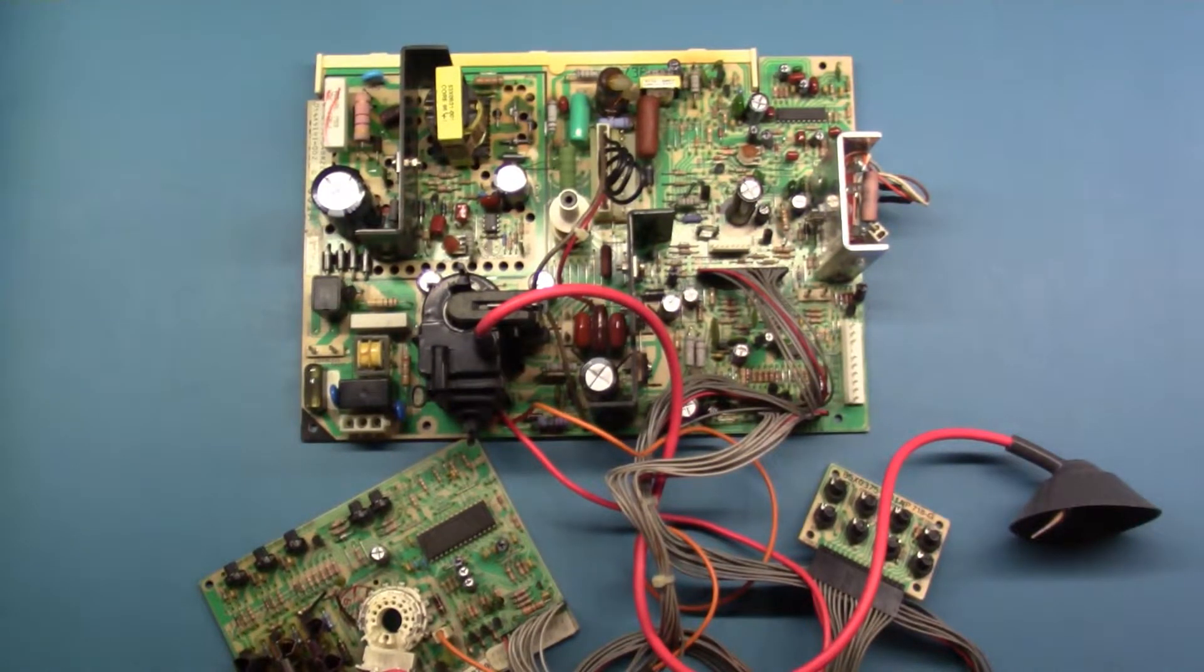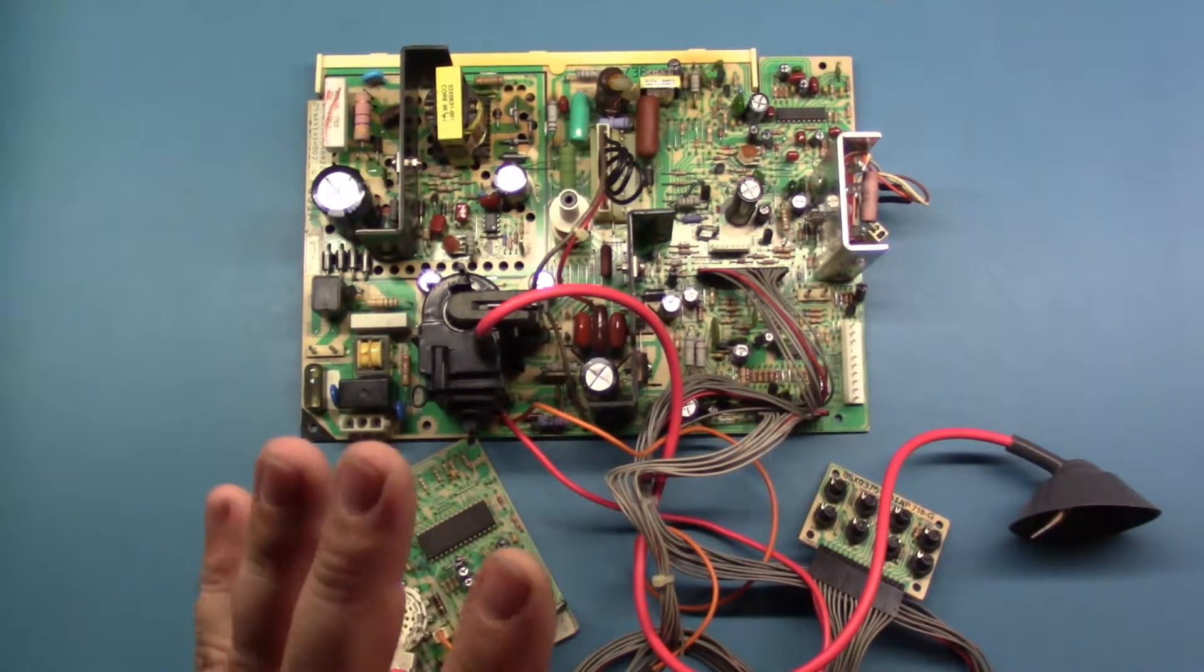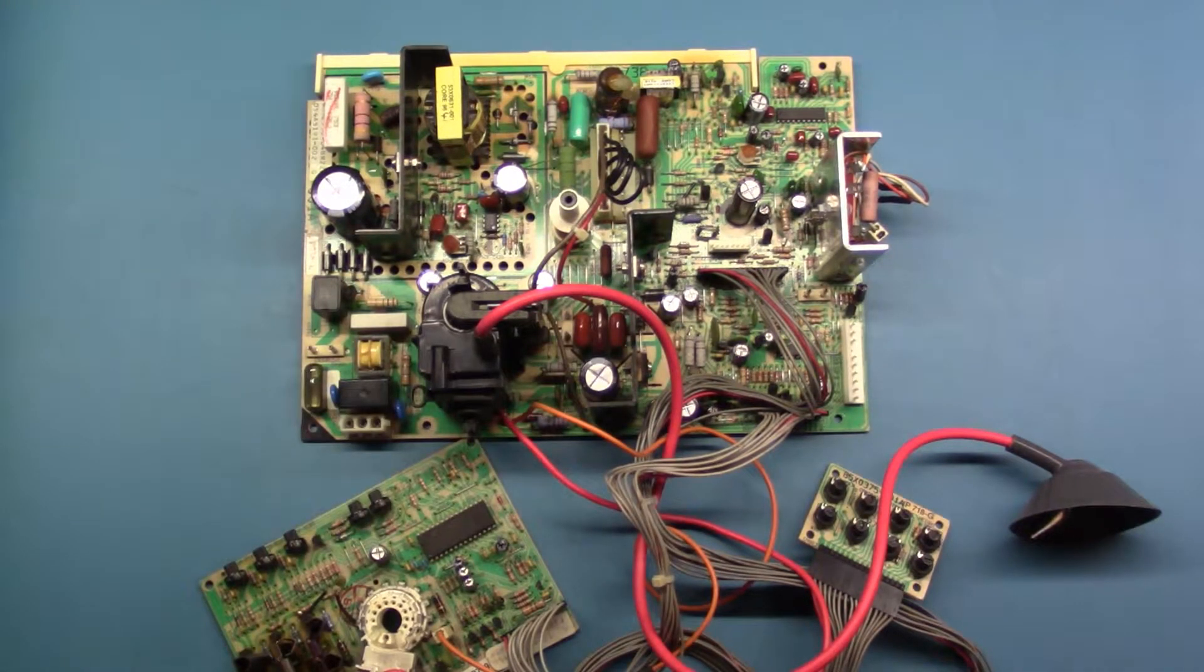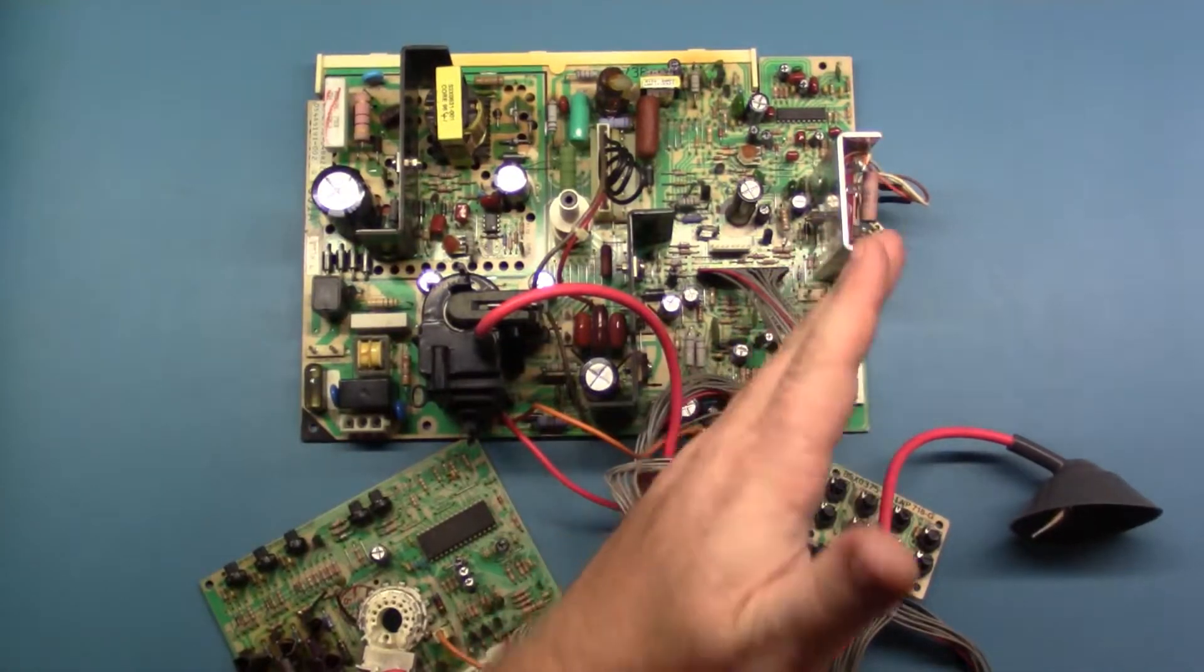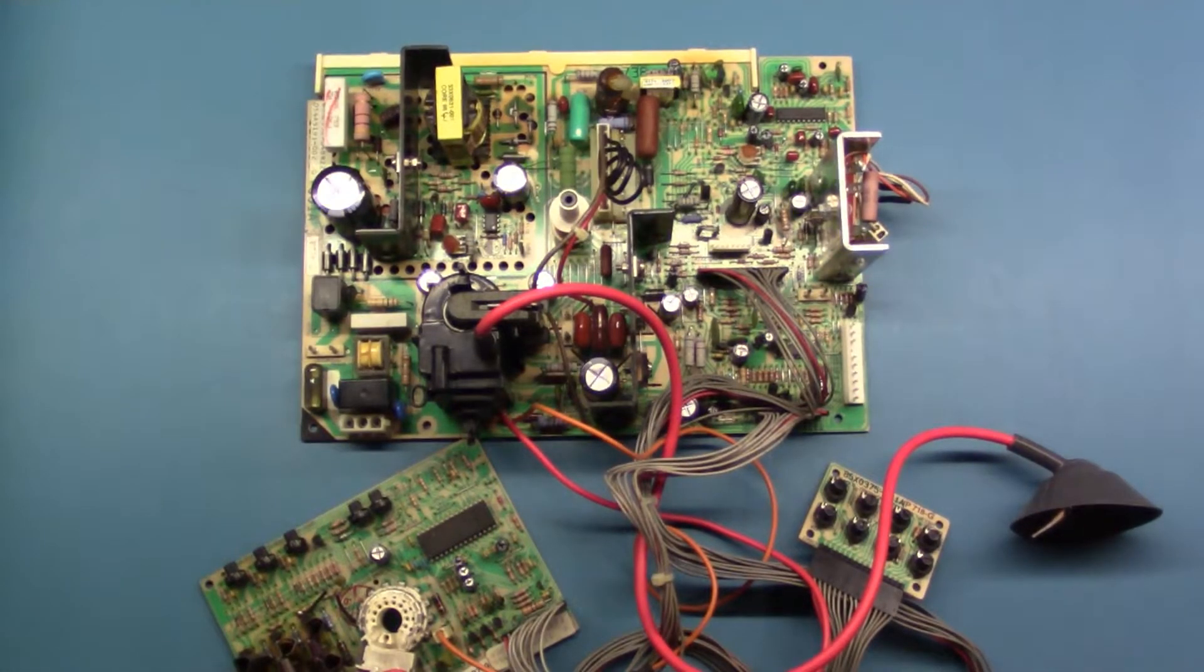Okay, so here we have a U5000 and we're going to do the light bulb test on the 5000 to determine whether we have a faulty power supply section or horizontal section. Again, just like the other ones - the 7400, 7500, U2000 - this is slightly different, so we're going to show you how to do it on the U5000.